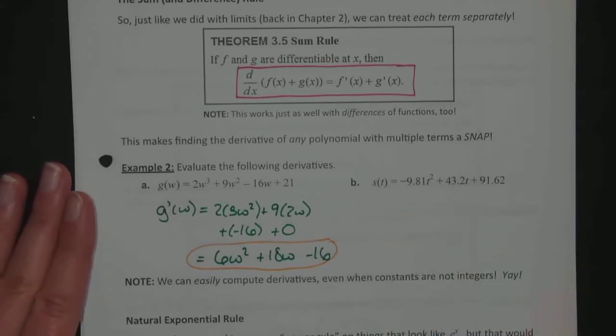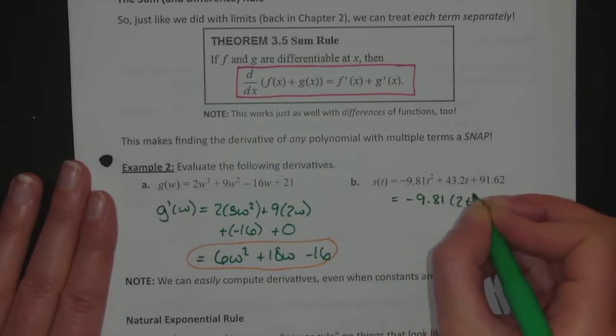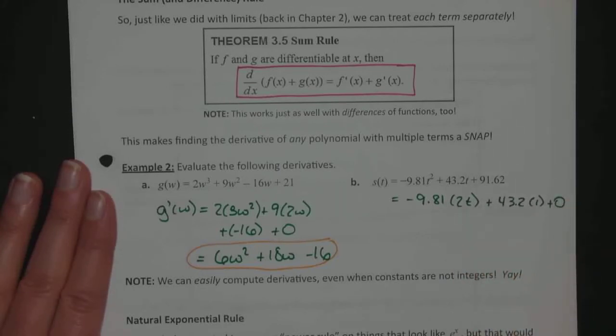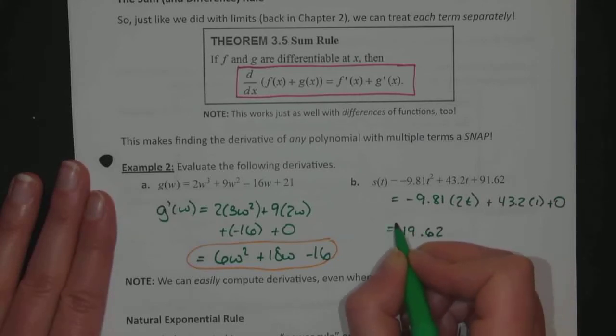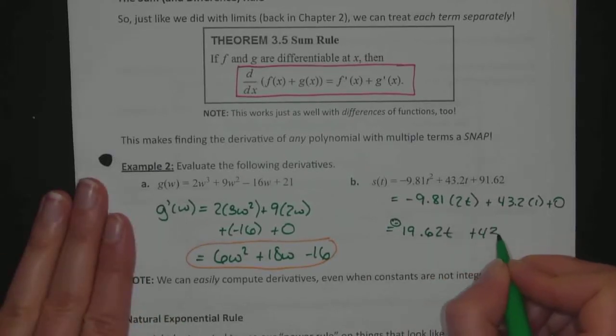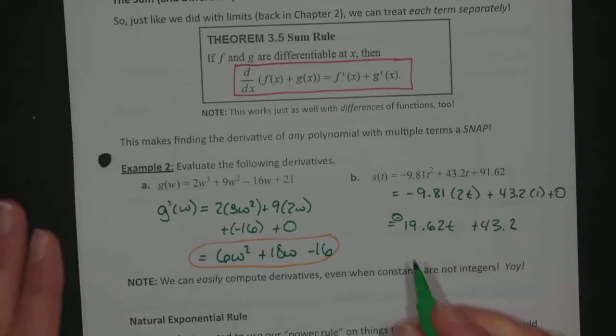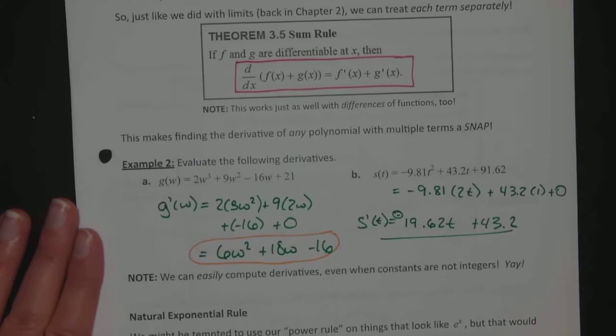So S(t), similarly, we're going to start with negative 9.81 times 2 times t plus 43.2 times 1 plus 0. That's the derivative. If I multiply that by 2, I get, what's 2 times 9? 18. Hopefully I got my multiplication there right, got my negative there. At t plus the 43.2. So I should have the S prime of t function. S prime of t function is negative 19.62t plus 43.2.